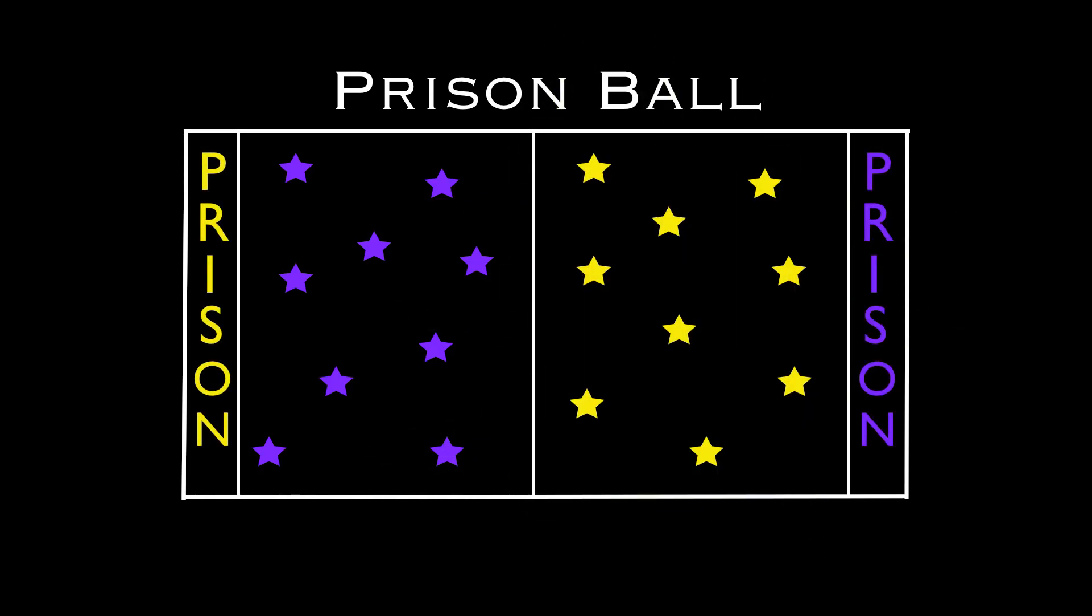So here we see the gym divided into two halves, and you're going to have to use some end lines to create some prison areas, or some zones for the prisons. You'll have one team on one half and against the other team on the other half. And here we see the corresponding prisons.